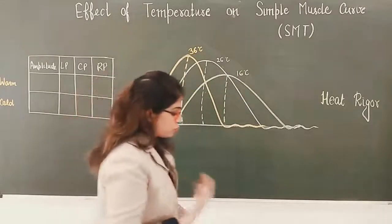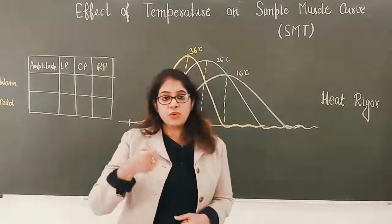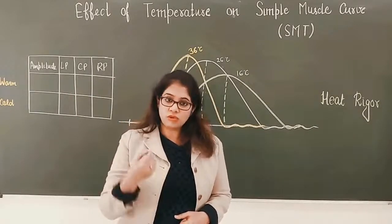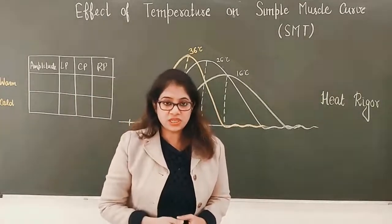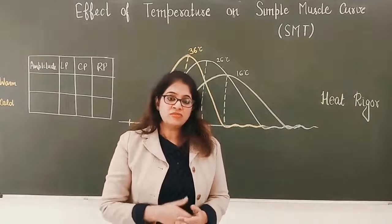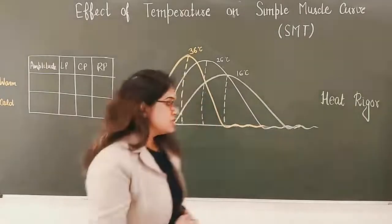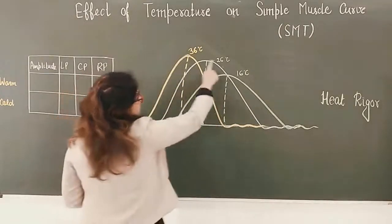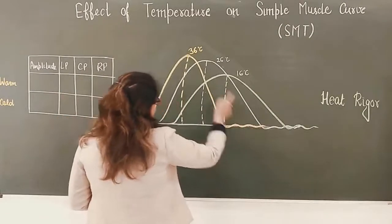To produce that effect, we pour cold saline or warm saline on a normal cell preparation and then obtain the graph. This is the graph at normal temperature as the baseline.